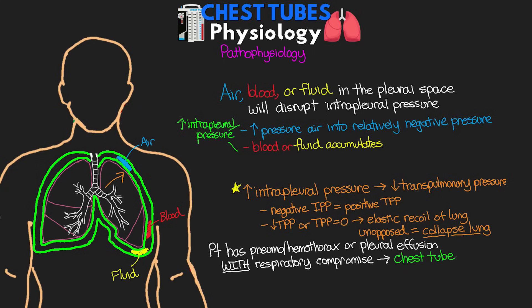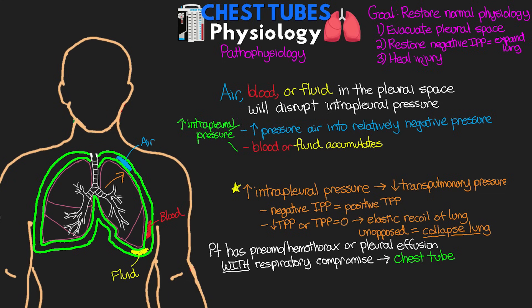If our patient has a pneumothorax, hemothorax, or pleural effusion that's causing clinical respiratory compromise, this is going to be an indication for chest tube placement. This is especially true in trauma situations where a pneumothorax can result in tension pneumothorax, or a hemothorax can involve a large volume of bleeding — both potentially life-threatening. However, if they have a small pneumo, hemo, or pleural effusion with no accompanying respiratory symptoms, they can potentially just be observed without a chest tube. By inserting a chest tube, our goal is to restore normal physiology: evacuate the pleural space of air, blood, or fluid; restore the normal relative negative intrapleural pressure to re-expand the lung; and ultimately heal the underlying injury.